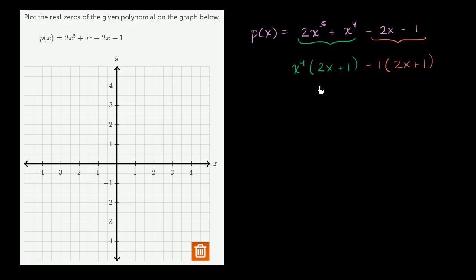It's exciting because now we can factor out a 2x plus 1 from each of these terms. So you have 2x plus 1, which we just factored out. If you factored it out of this term, you're left with x to the fourth. And you factor it out of this term, you're left with just the minus 1.